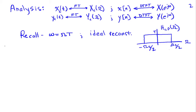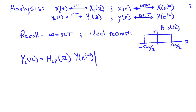From our block diagram, the output Yc(Ω) is given by the ideal reconstruction filter HLP(Ω) times Y(e^jω), where lowercase ω equals Ω·T. So the output Fourier transform is HLP(Ω) times Y(e^jΩT).